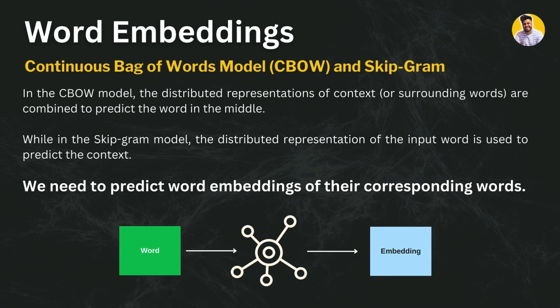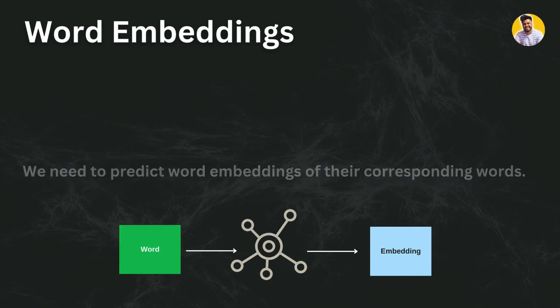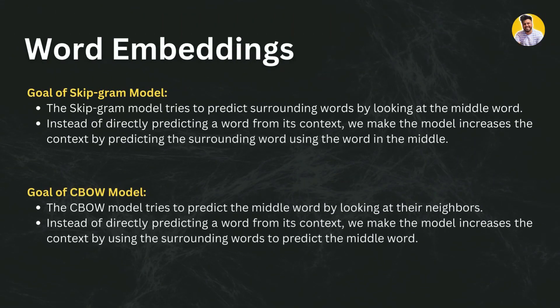The goal of the Skip-gram model is to predict the surrounding words by looking at the middle word only. Instead of directly predicting the word from its context, we build a model that increases context by predicting surrounding words using the middle word. The CBOW model does the opposite — it tries to predict the middle word by looking at the surrounding words, increasing context by using surrounding words to predict the middle word.